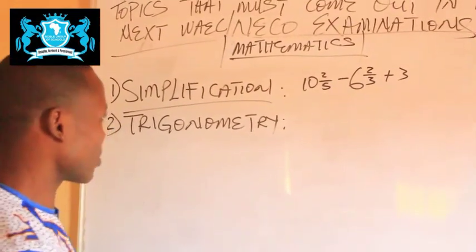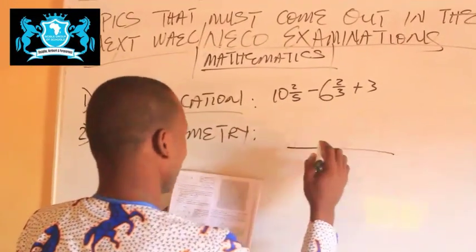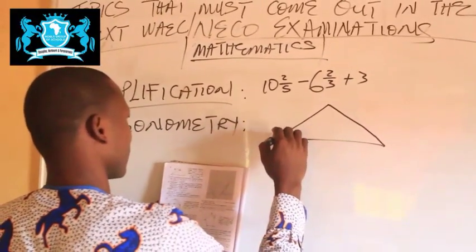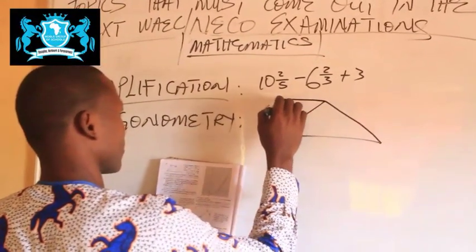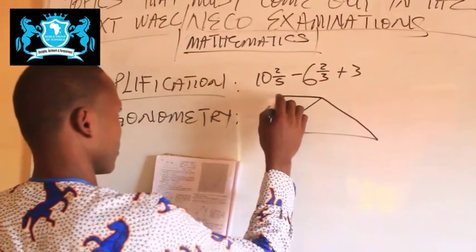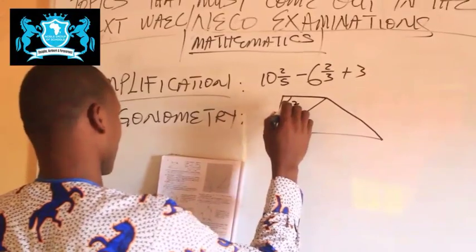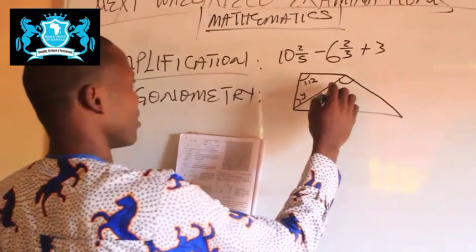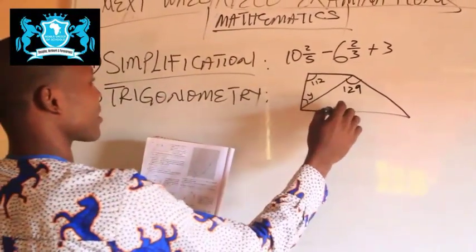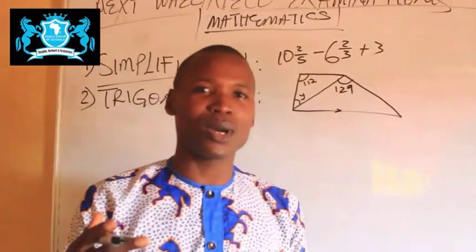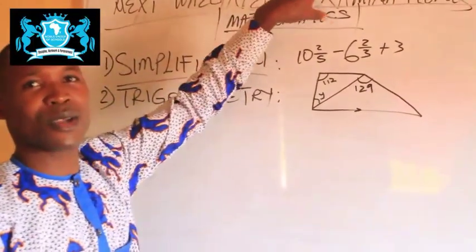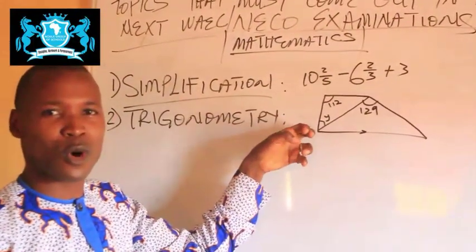Let me give you a little example of a trigonometry question. This is an example of a question on trigonometry. These kinds of questions come up regularly, and one thing you should know is that WAEC and NECO have repeat questions. So as you are preparing for WAEC and NECO channel examinations, make sure that you also focus on trigonometry.